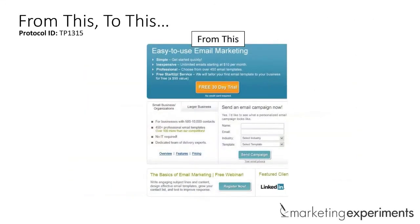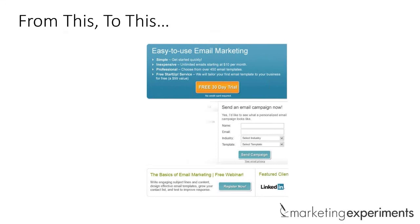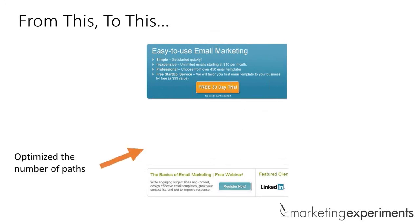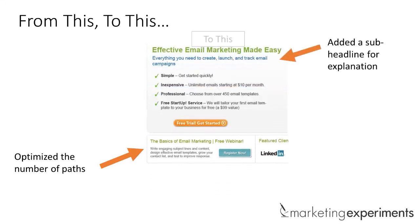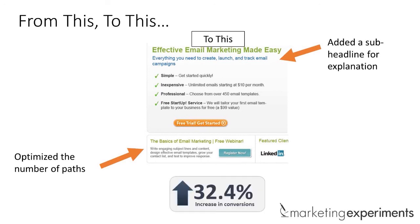Here's another example — easy-to-use email marketing, with options including small business, organizations, large, and a free 30-day trial. The team optimized the number of paths, reducing from probably five down to two, based on the commonalities of the groups. Then they added an explanatory sub-headline using the same exact text, to help explain the process. The result: 32% more conversions.